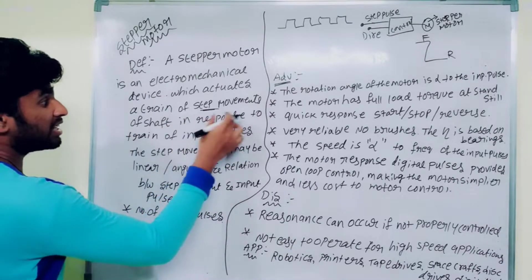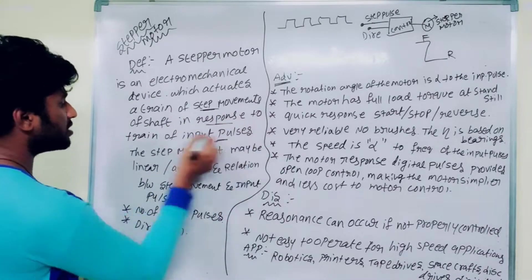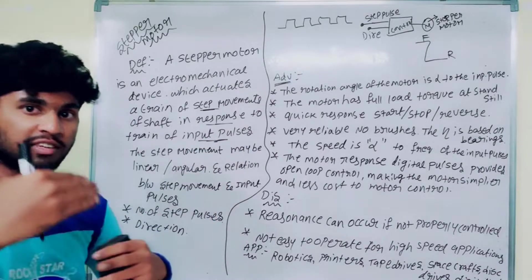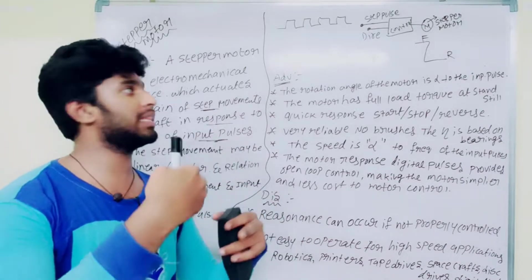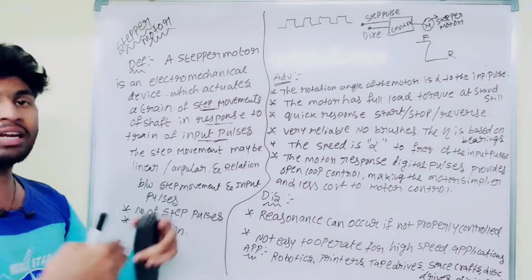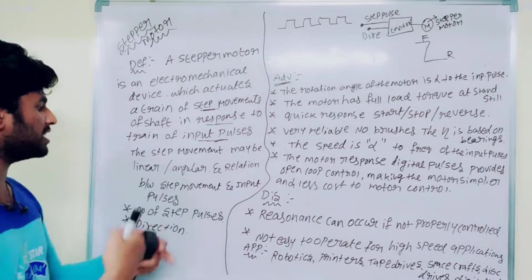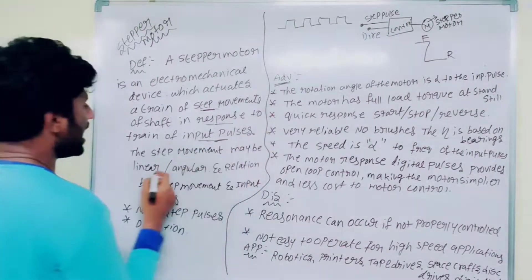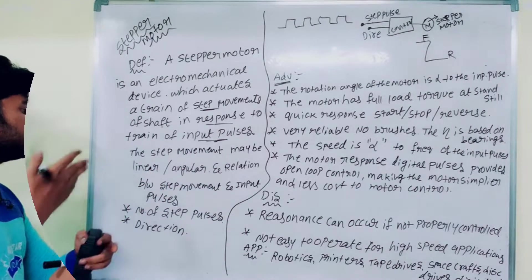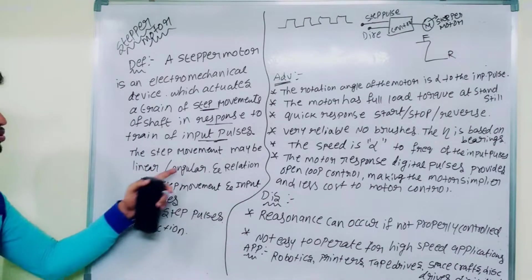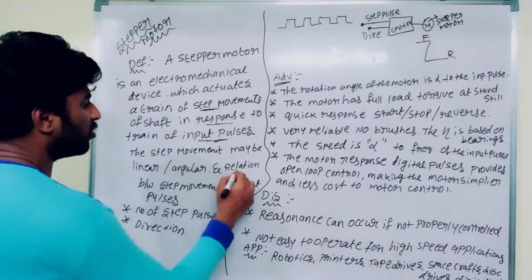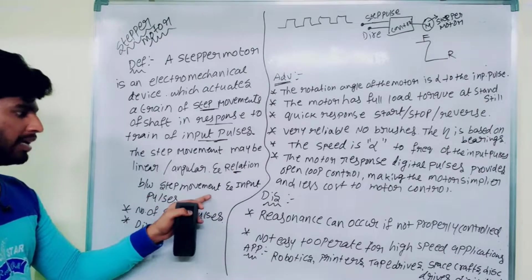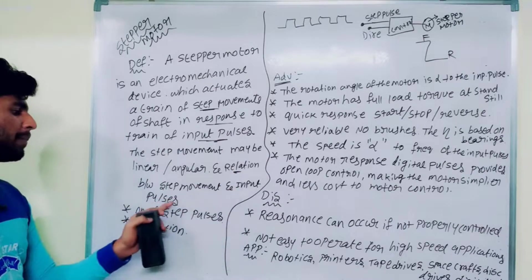Based upon the responses to step-input signals — when you have the input signals, the movement, that means step-movement. The step movement may be linear or angular. This is the relationship between step-movement and step-angle.